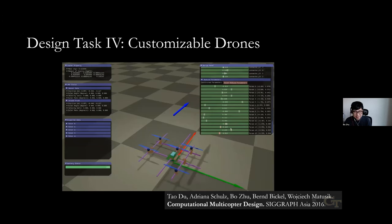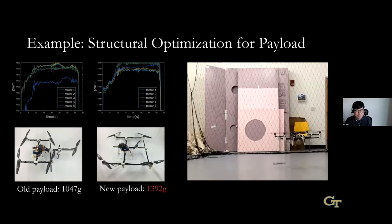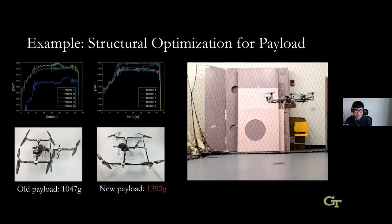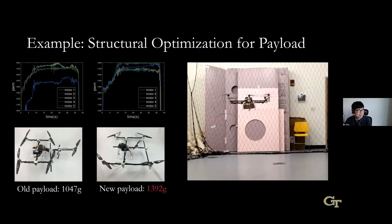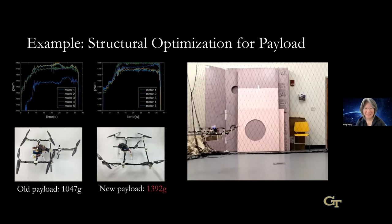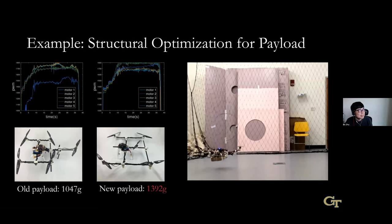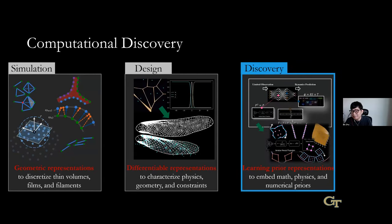Let me skip the drone simulation slides — the idea is similar: building differentiable operators to simulate rigid body drones and then do optimization. Now for the last category, discovery. As I mentioned earlier, we know the observation and the physical process, we know the material property, and we want to figure out the governing equation. The motivation is that not every physical system has an equation — especially new or very complicated systems where it's hard to give a mathematical model immediately.